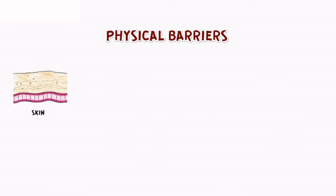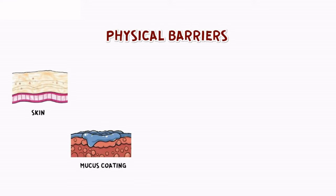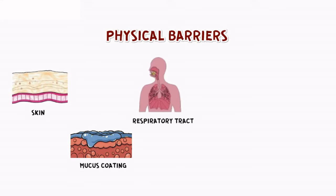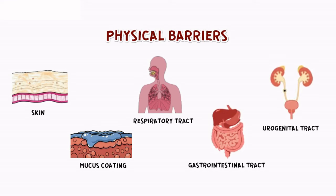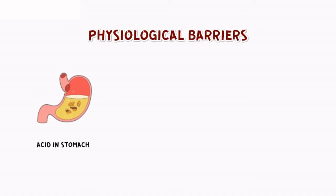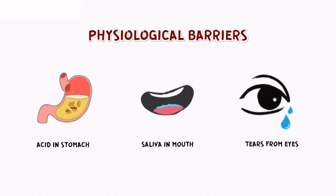Physical barriers like the skin and mucus coating of the epithelium lining the respiratory, gastrointestinal, and urogenital tracts prevent the entry of microorganisms. Physiological barriers like acid in the stomach, saliva in the mouth, and tears from eyes prevent microbial growth.